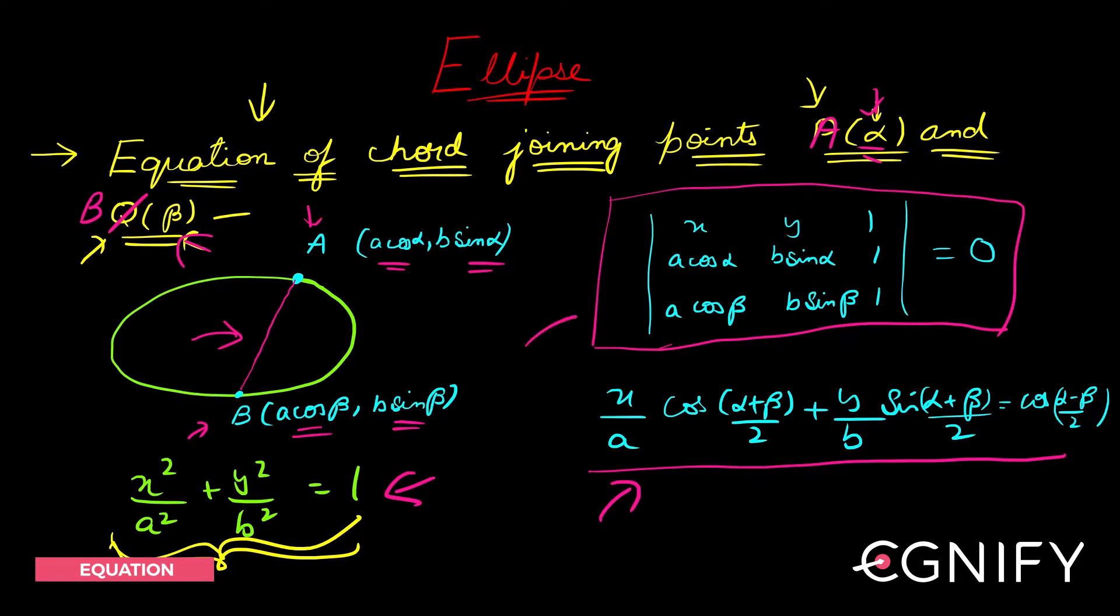If you want to find the equation of the chord joining these two, that means the equation of AB, you can take the help of this matrix - that is the result. In fact, when you expand this matrix, this is what you get. And remembering this is very easy: (x/a)cos((α+β)/2) + (y/b)sin((α+β)/2) = cos((α-β)/2). A lot of times this result is very helpful in solving problems.